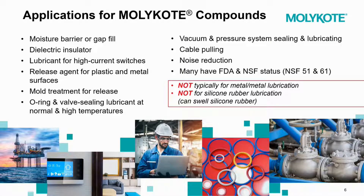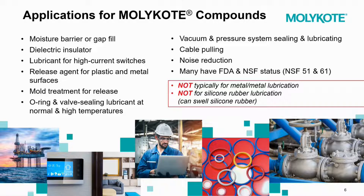Let's dive into applications. It's great as a moisture barrier — silicone is excellent at repelling water. It also serves as a gap fill and a dielectric insulator to keep things from arcing, which is why it's great for lubricating high-current switches. It's commonly used as a release agent for plastic and metal surfaces, such as plastic injection molding. One of the most common applications is O-rings and valve sealants, suitable at normal, high, and very low temperatures, as well as vacuum and pressure systems. It's also used for wire pulling — lubricating cables as they're being pulled through an orifice.